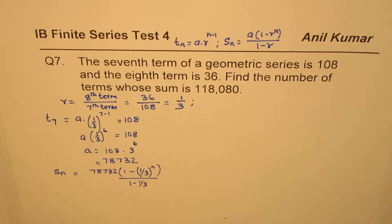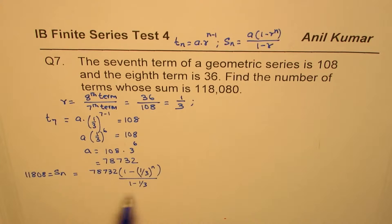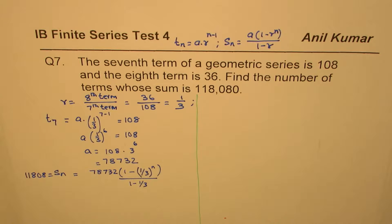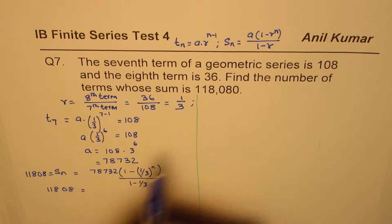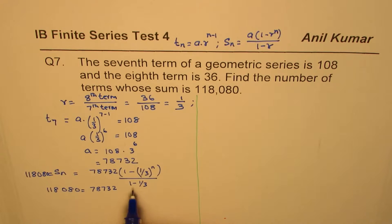We are given the sum is 118080. So we set 118080 equal to that expression. In this equation, n is the only variable we need to calculate. Note that 1 minus 1/3 equals 2/3, so the denominator simplifies to 2/3. We can write 118080 equals 78732 times (1 minus (1/3) to the power of n) divided by (2/3).